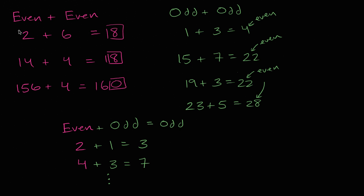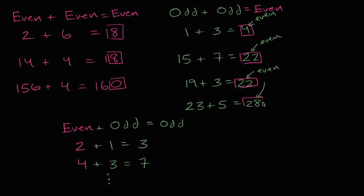So let's just remind ourselves: even numbers are multiples of two, including zero. Odd numbers are just numbers that aren't multiples of two, that aren't even. An even plus an even equals an even. An odd plus an odd also equals an even — we saw that multiple times. But an even plus an odd — that is odd.